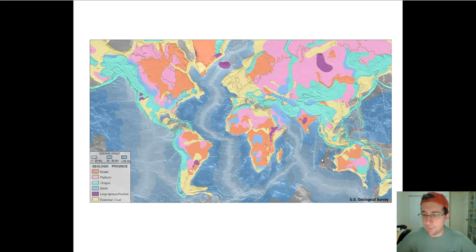You also have platforms, and platforms are areas where the sediments are being added by eroding shields or from the ocean and gathering around the shields, and those are marked in the pink you see in the picture. The shields are more salmon color.